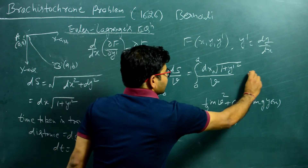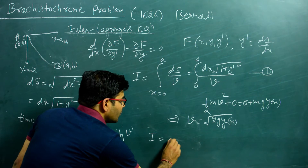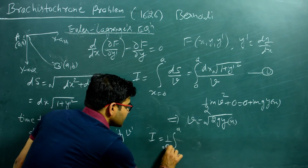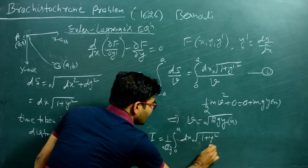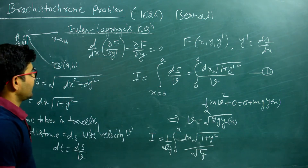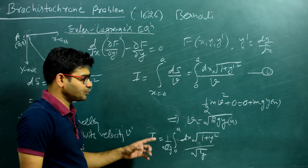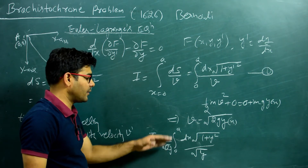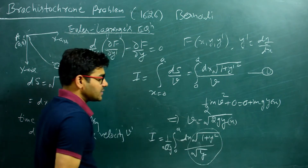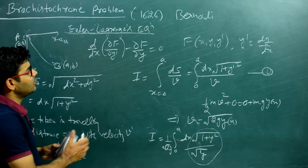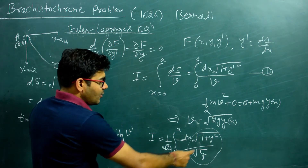From this equation we get V = √(2gy(x)). Now putting this value back into the integral, we get: I = ∫₀ᵃ √(1 + y'²) / √(2gy) dx. Since √(2g) is a constant, the functional we have to extremize is f = √(1 + y'²) / √y. This is the functional from our calculus of variations which we extremize using the Euler-Lagrange equation.